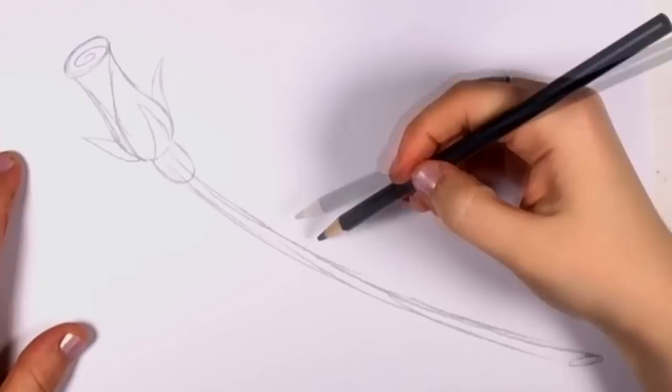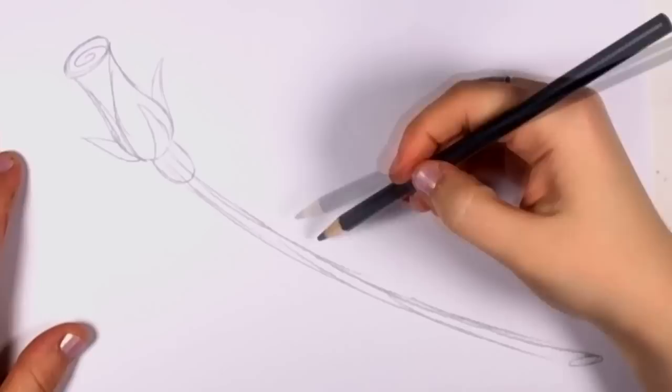And then you're going to draw the leaf. And it's just one long line there for the stem, and then an oval shape with two pointy ends around it.